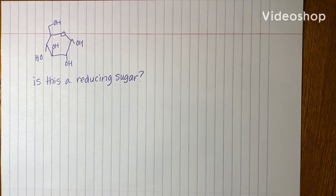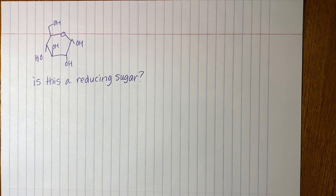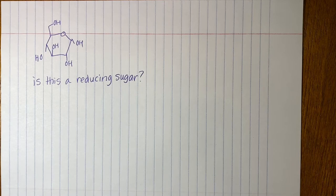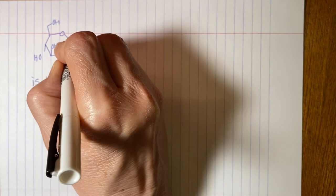This video shows you how to determine if a monosaccharide or sugar is a reducing sugar. So our question is, is this cyclic structure shown here a reducing sugar? Reducing sugars have free anomeric carbons. So that's the first thing you should look at. Where's the anomeric carbon?